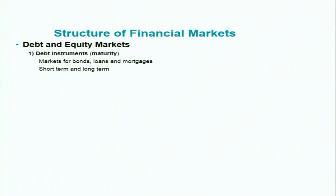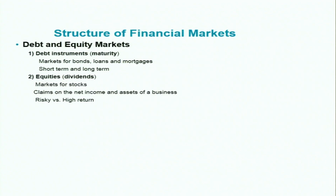Let's begin with the structure of financial markets. Overall, financial markets can be categorized into two markets: one is called the debt market and the other is equity markets. The debt market is mainly for bonds, loans and mortgages, and there can be different types of debt instruments — short term and long term.